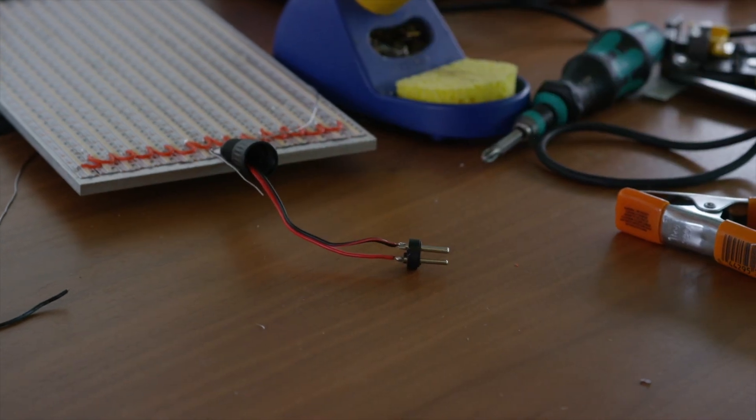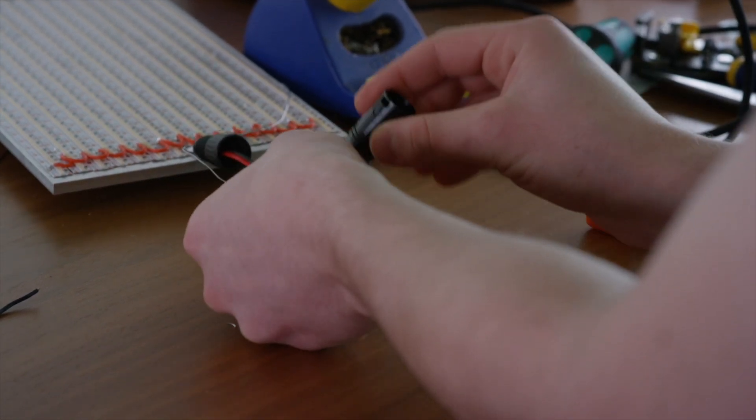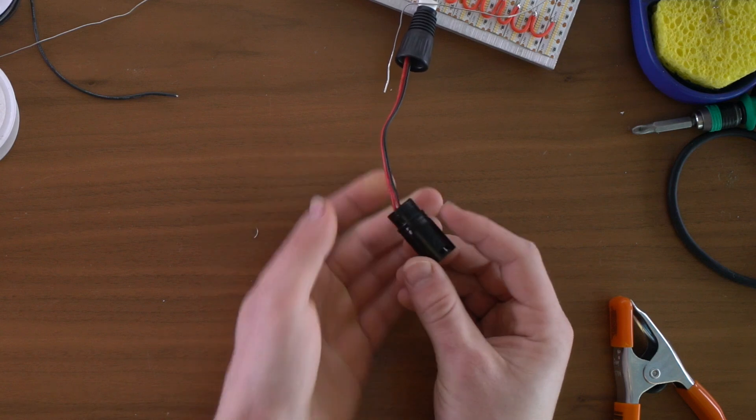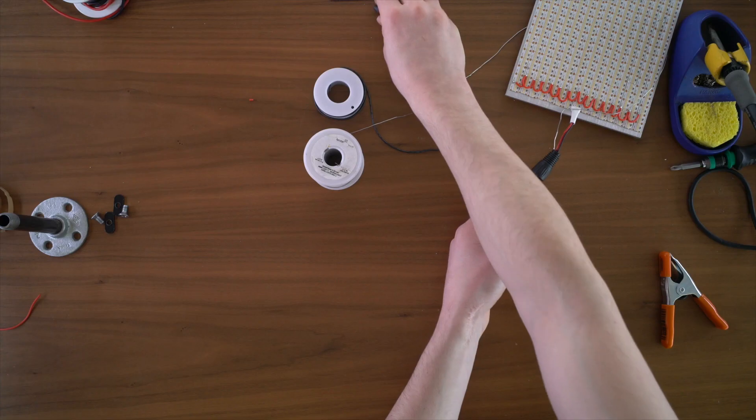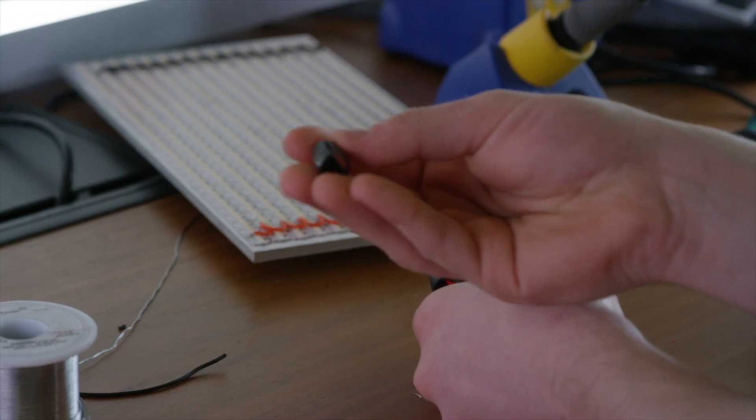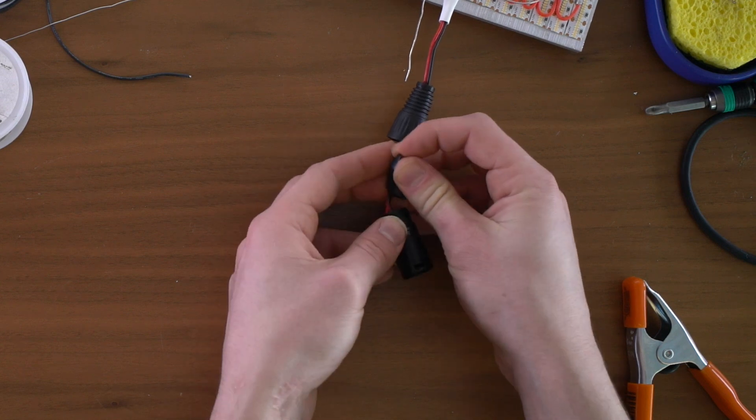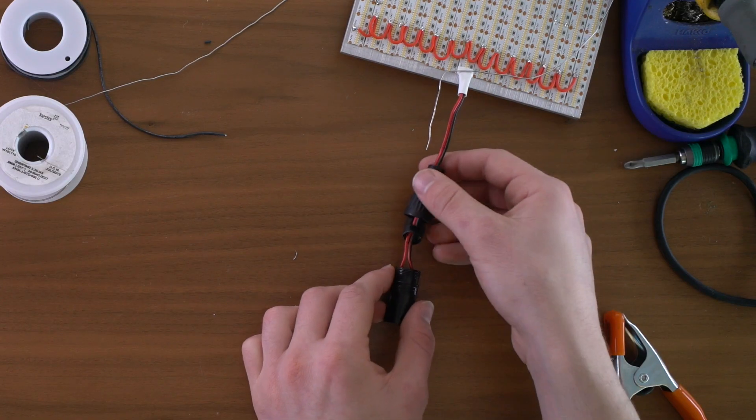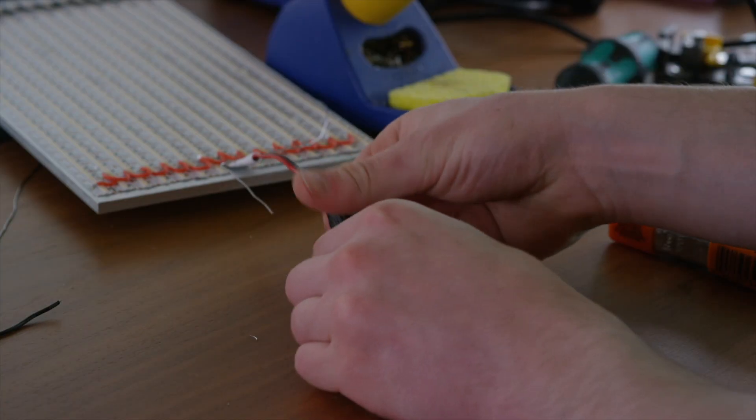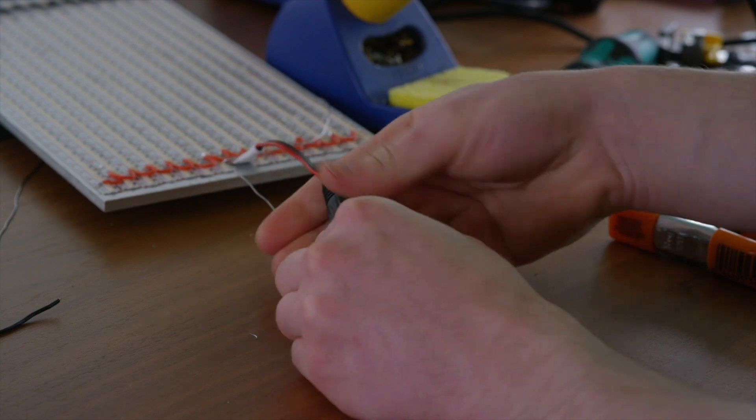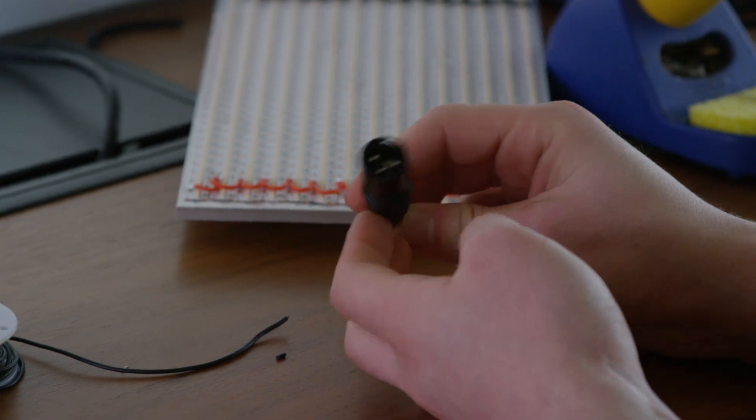Now you can go ahead and slide this casing back on and kind of spin it around to find the right orientation. It'll only slide in in the correct orientation. Then you can take your little piece of plastic that we took off earlier and wrap that around the cable. Now you can slide the connector together and screw it back together. When you're done the connector should look something like that.